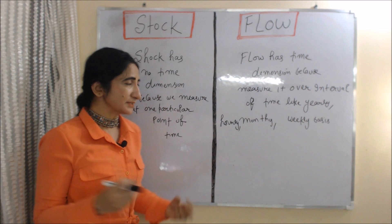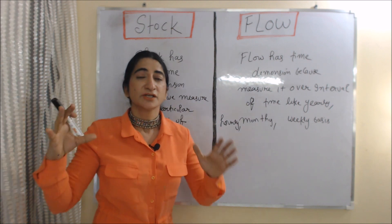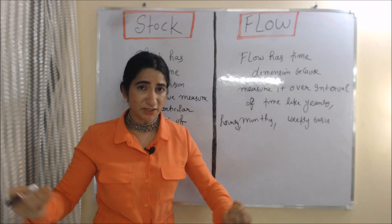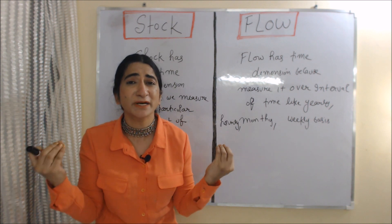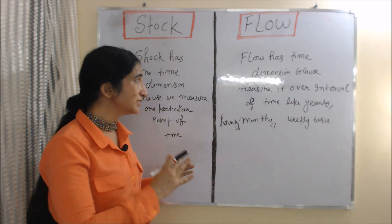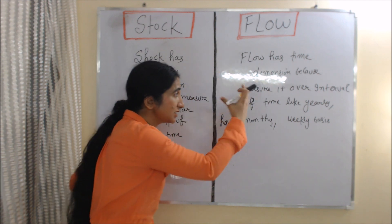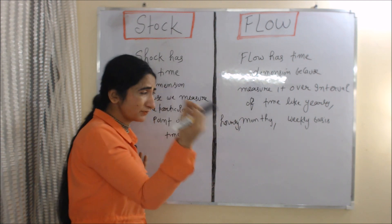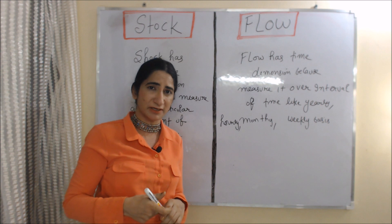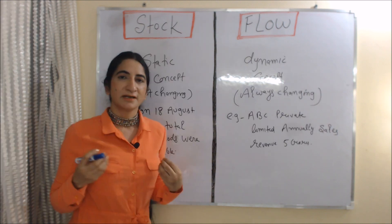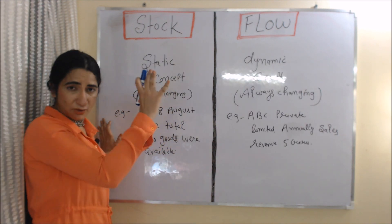The next difference is that stock has no time dimension, because we measure it at one particular point of time. On the other hand, flow has a time dimension, because we measure it over an interval of time — like yearly, monthly, weekly, or hourly basis.